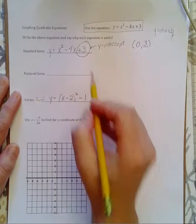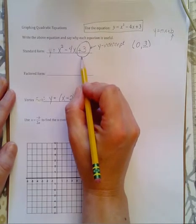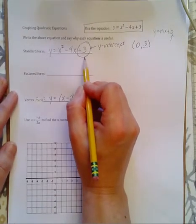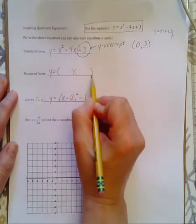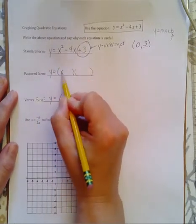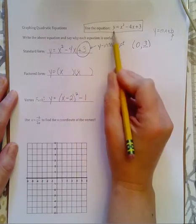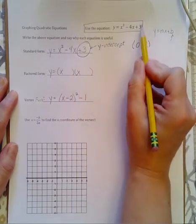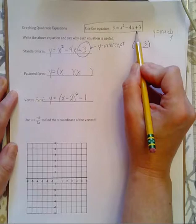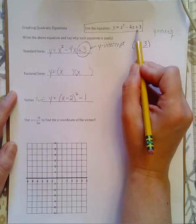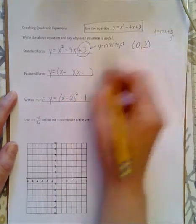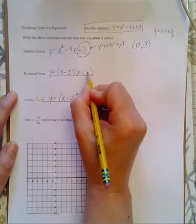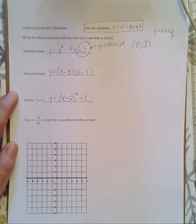Factored form. Not all quadratics can be factored, but if they can be factored, we're going to do it. So y is equal to, parentheses x in the beginning of each. We're going to multiply to get a positive number. When you multiply to get a positive, our numbers are plus plus or minus minus. In this case, minus minus. And we're multiplying to get three. There's only one way to do that. So this is your factored form.